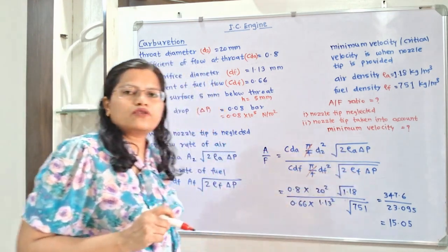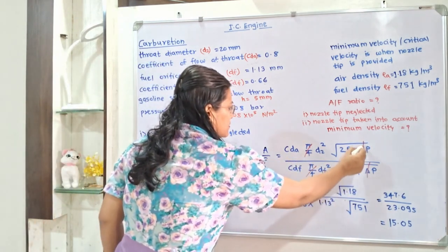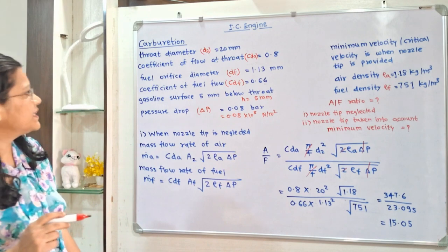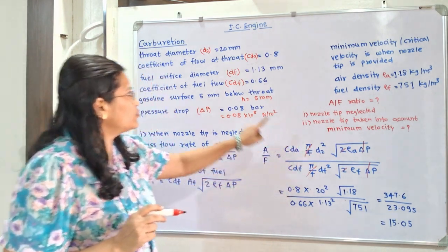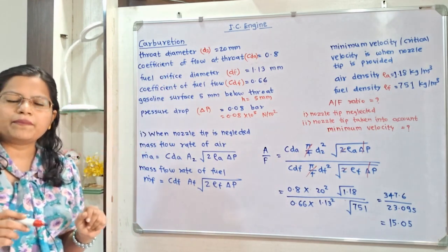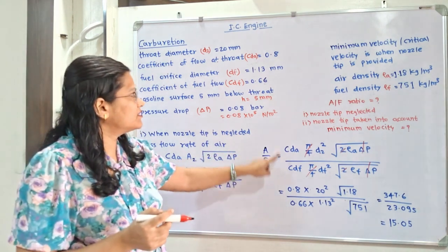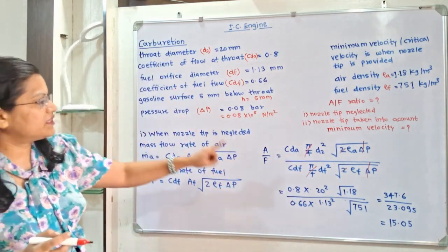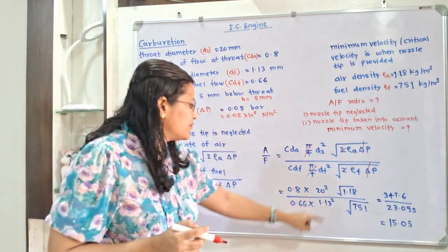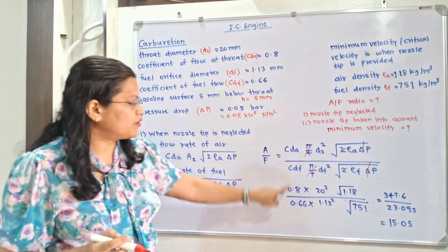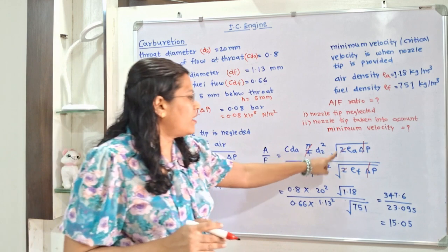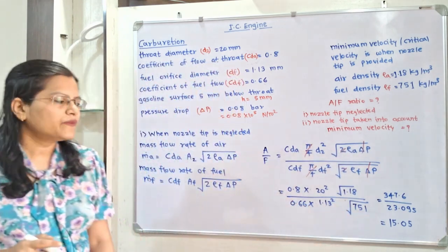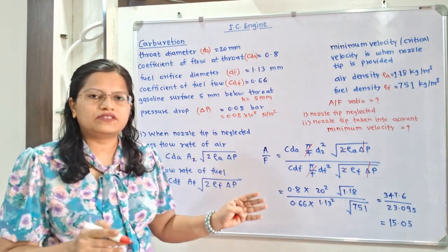After cancellation, the A/F ratio becomes: (CdA × D2² × √ρA) / (CdF × Df² × √ρF). Since D2 and Df have the same unit and we are taking a ratio, we can use millimeters directly. Substituting: CdA = 0.8, D2 = 20 mm, CdF = 0.66, Df = 1.13 mm, ρA = 1.18 kg/m³, ρF = 751 kg/m³. Calculating gives A/F ratio = 15.05.